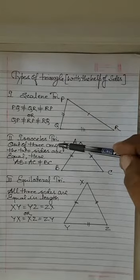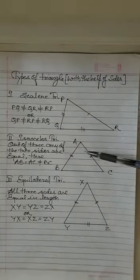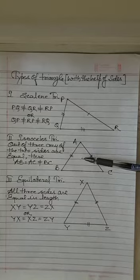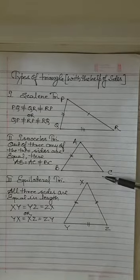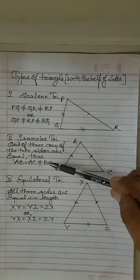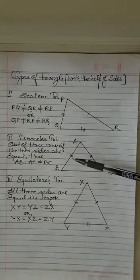Isosceles triangle. Second one. Iso means two sides will be equal. Any two. Here AB and AC are equal. So AB and AC are equal and BC is not equal. So it is an isosceles triangle.